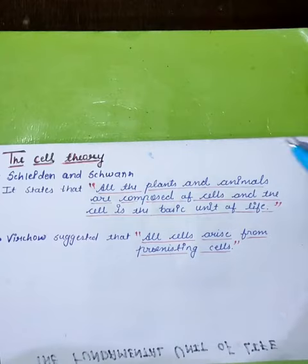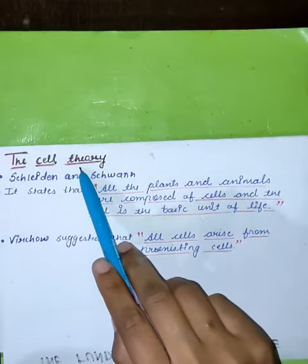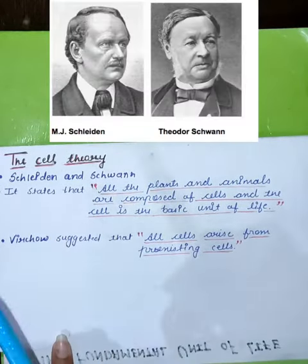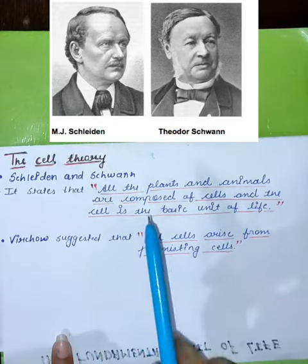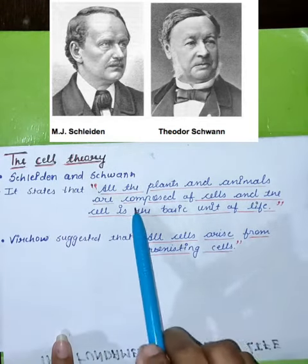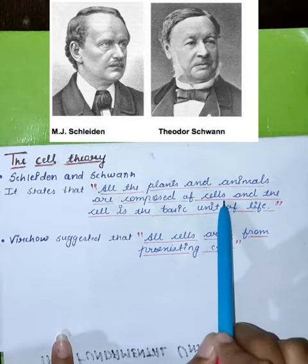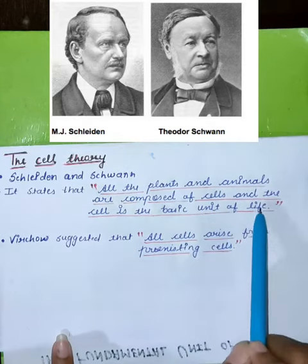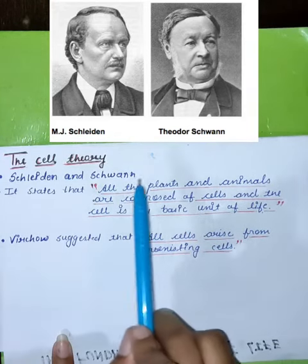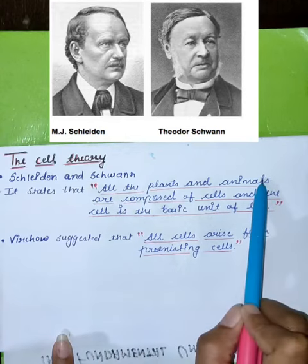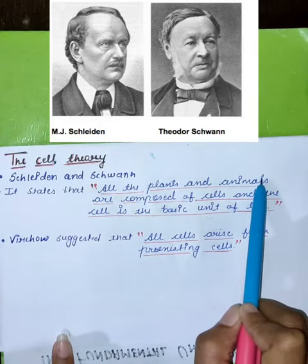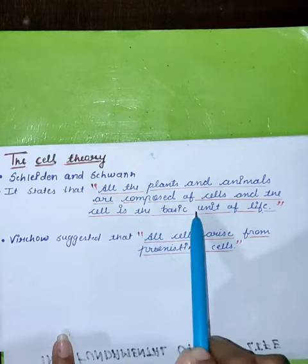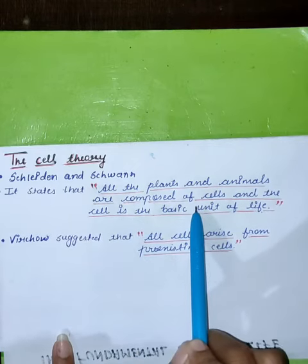Our next topic is the cell theory. It is given by Schleiden and Schwann. According to this theory, all plants and animals are composed of cells, and the cell is the basic unit of life.